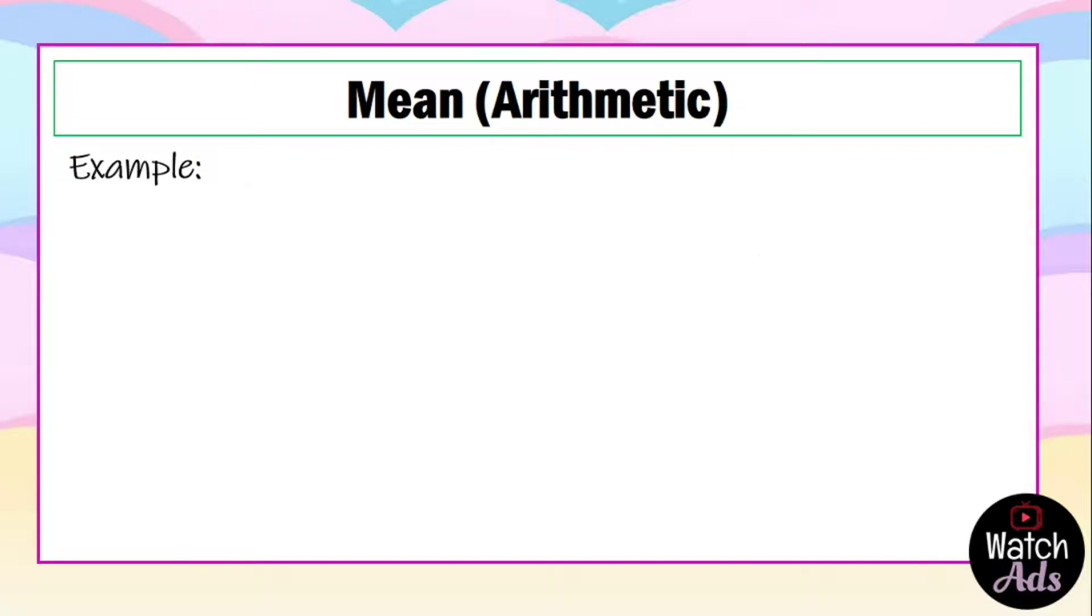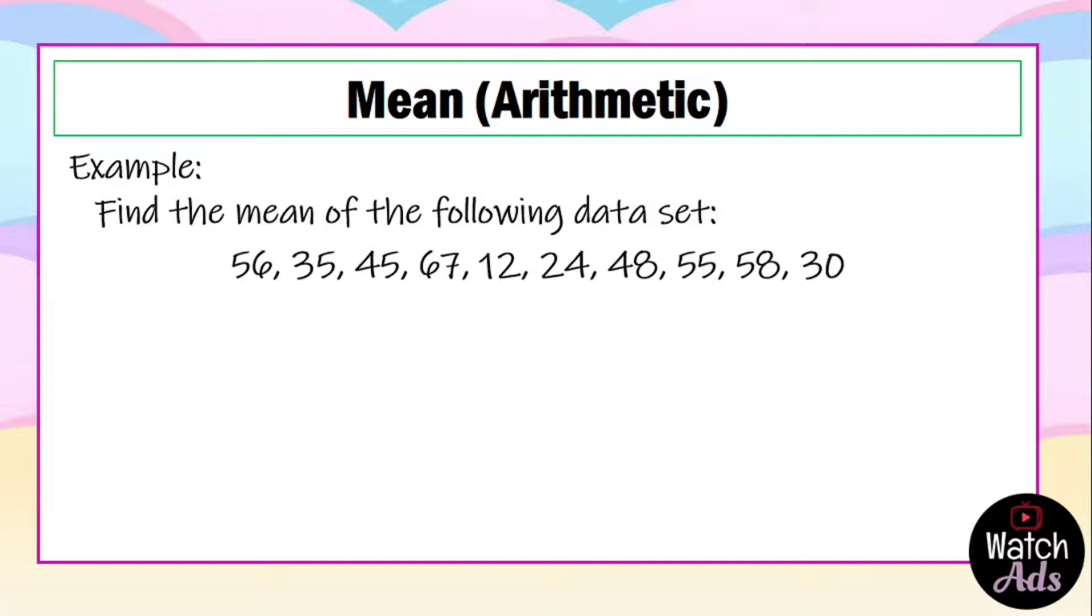Now let's have an example. Find the mean of the following data set: 56, 35, 45, 67, 12, 24, 48, 55, 58, and 30.